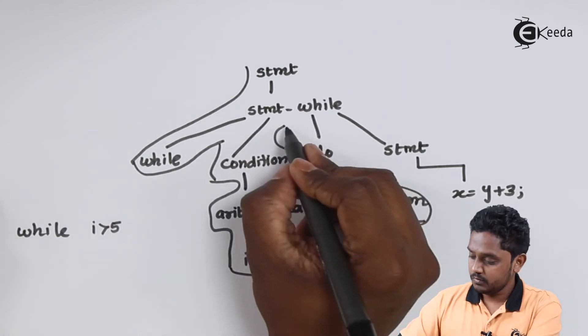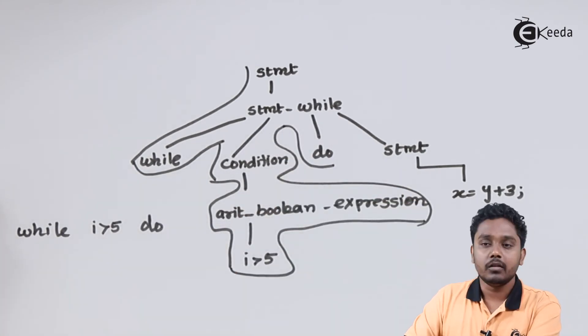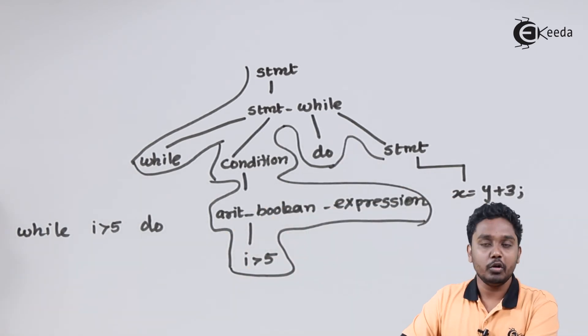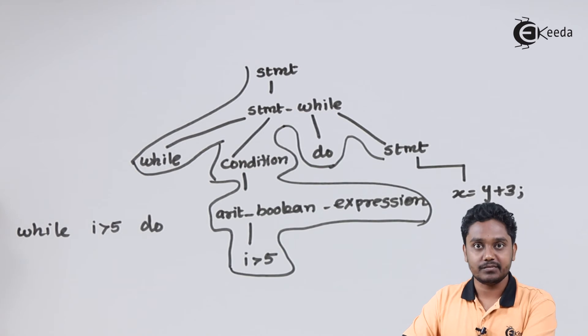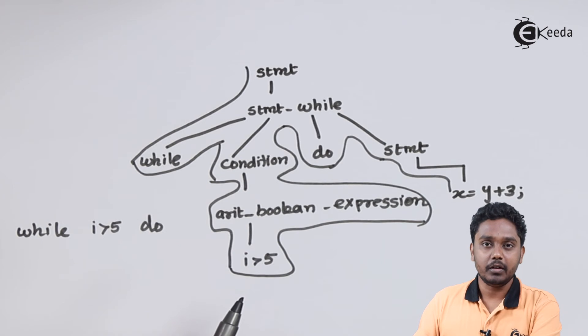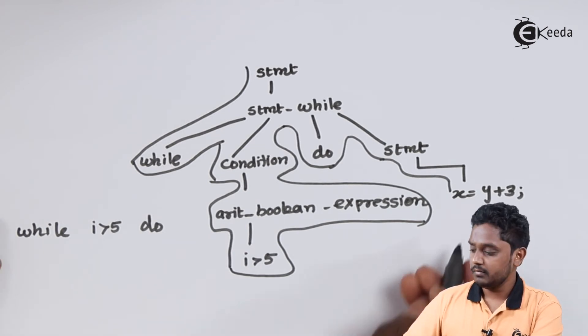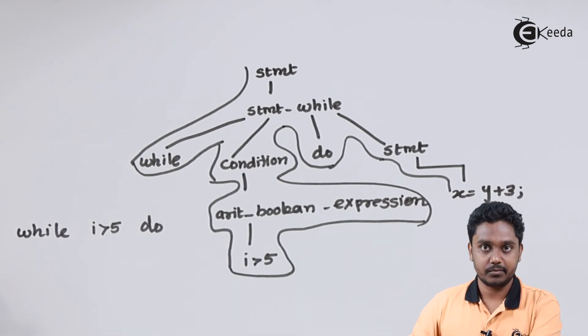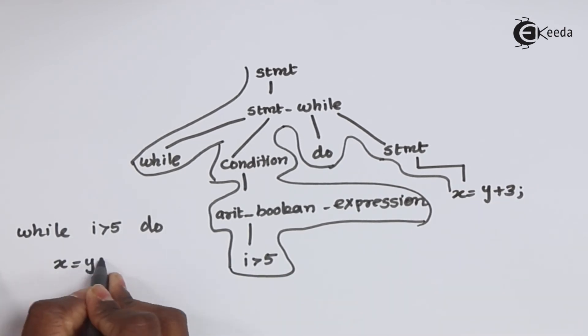Then we have a do, following the do we have the statement which has to be executed, going to non-terminal stmt which represents statement and the statement over here is an other statement, non-Boolean and non-while statement x is equal to y plus 3, in fact this is an assignment statement, followed by a semicolon.